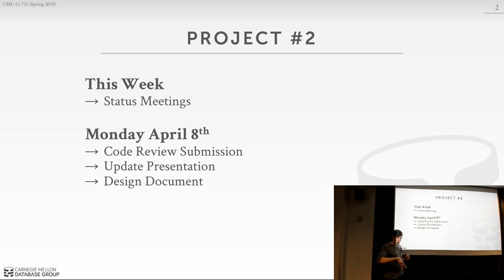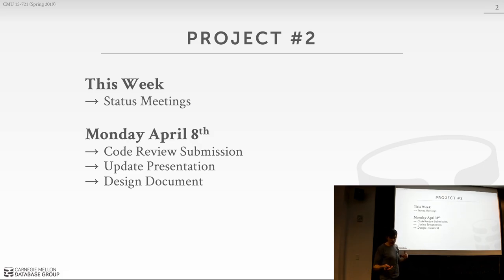This year we're also doing something different where you have to turn in a design document — a template file we provide where you write in English a description of what your PR looks like and what your implementation actually does. I'll go over what's expected for the code review on Wednesday in class. You'll list your PR on the spreadsheet on the Google Doc, and I'll assign another group to look at it. You're going to do this twice — now as a checkpoint, and again with the same team pairings at the end of the semester.